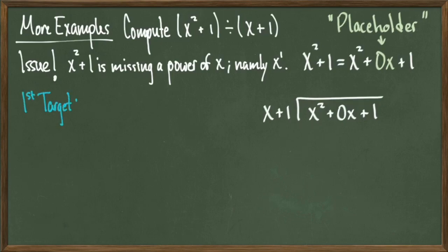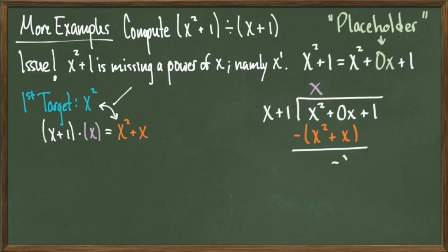Just like we've been doing, x squared, which is the leading term of the polynomial we're dividing into, is our first target. Multiply x plus 1 by x to get x squared plus x, which will put an x in the top and have us subtract the product x squared plus x from the polynomial, which gives us an answer of minus x plus 1 once we drop down the 1. Our second target is minus x.